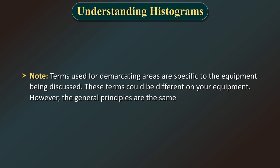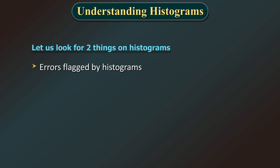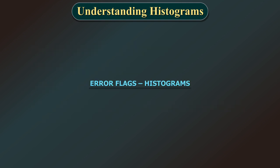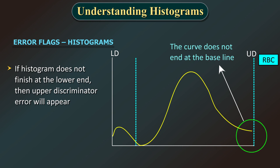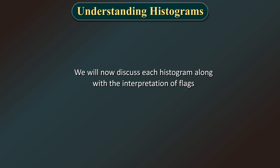Note: the terms used for demarcating areas are specific to the equipment being discussed and could be different on your equipment; however, the general principles are the same. Now, having understood normal histograms, we look for two things: first, errors flagged by histograms — messages given by the equipment to warn the operator about sample problems needing rechecking, which should also be verified manually by preparing a smear or sample rerun; and second, pathologies indicated. Either way, smears should be checked as remedial or corroborative steps.